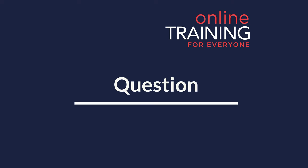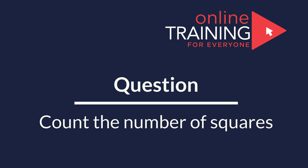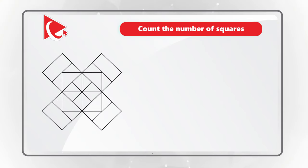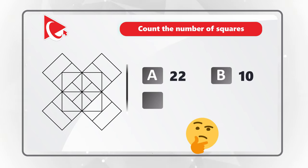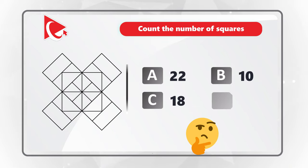Here is an interesting problem where you need to count the number of squares in the presented shape. The correct number is one of four different choices: choice A 22, choice B 10, choice C 18, and choice D 14. Take a close look at the picture to see if you can come up with the right solution.